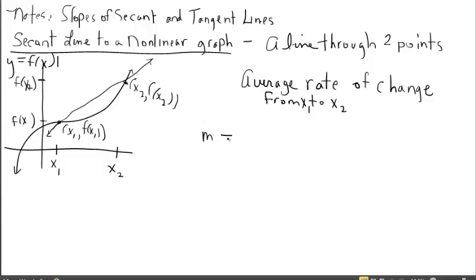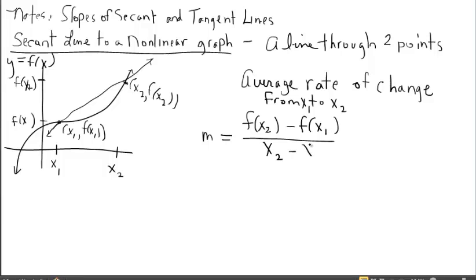The slope of this secant line — also known as that average rate of change — slope m is equal to the change in the y's divided by the change in the x's. According to the way I have it labeled, we produce what we call the difference quotient, because we're subtracting and also dividing. Nothing new that you haven't seen from years past — you started your study of average rate of change back in Algebra 1, probably with specific numerical points. Here we're doing work with notation that represents something familiar.